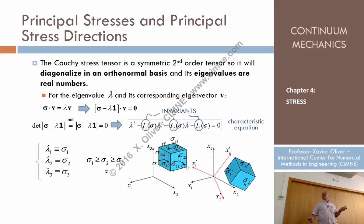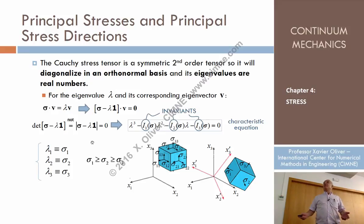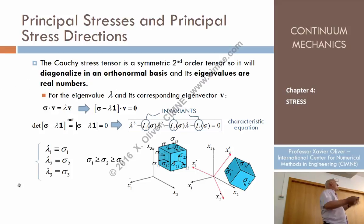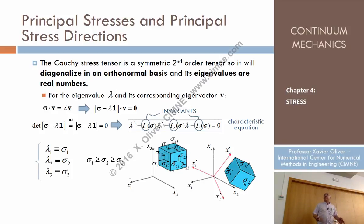Any combination of invariants is also invariant. For instance, if something doesn't change when changing the system of coordinates, and something else also doesn't change, then the sum of them doesn't change, the multiplication of them doesn't change, and the square root of them doesn't change. But in principle, there are three, which are called the invariants I of the stress tensor.